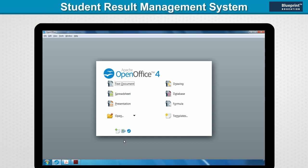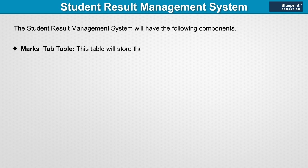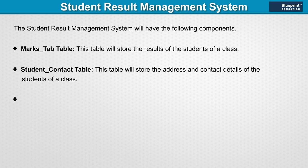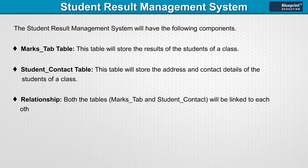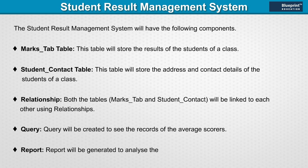Student Result Management System. The Student Result Management System will have the following components: the Marks_tab table, which will store the results of the students of a class, and the Student_contact table, which will store the address and contact details of the students. Both tables will be linked using relationships. A query will be created to see the records of the average scorers, and a report will be generated to analyze the average scorers.